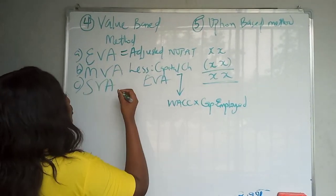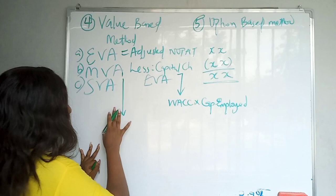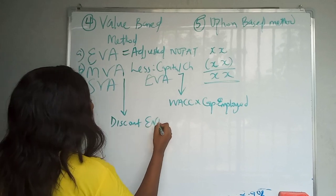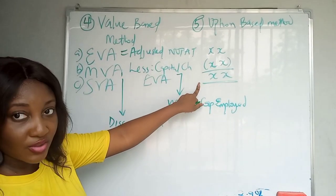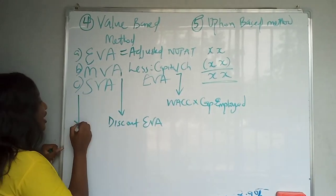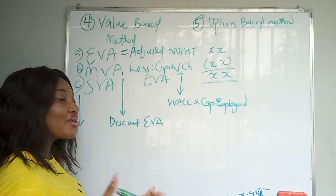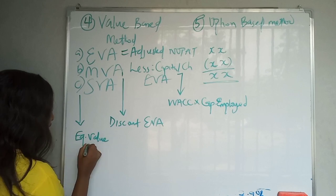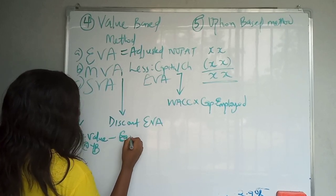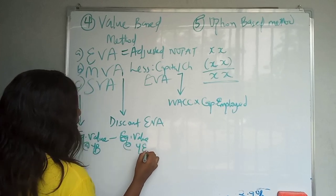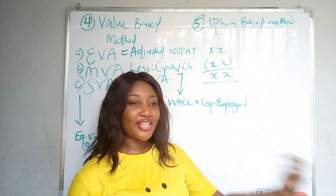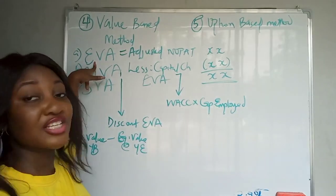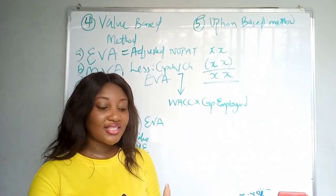For Market Value Added (MVA), you discount the EVA using WACC — that gives you the company's valuation. For Shareholders Value Added (SVA), you look at the equity value at year-end minus the equity value at the beginning, giving the value added to shareholders over the period. EVA can be negative — it's possible a company has not added any economic value.